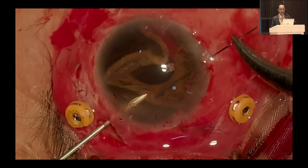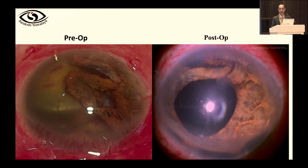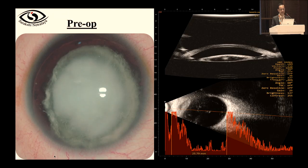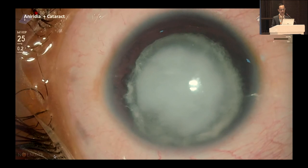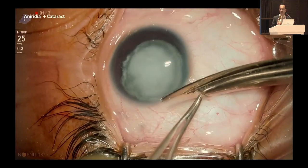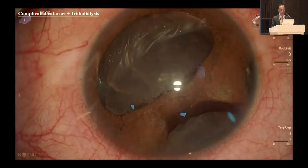Anchoring was done at two-thirty, one-thirty, and five-thirty o'clock meridians with 10-0 prolene. For this patient we performed lensectomy, vitrectomy, endolaser, scleral fixation of IOL, and constructed a pupillary diaphragm even in this severe case. In congenital aniridia, the commonest reasons for poor vision are foveal hypoplasia and photophobia; these patients need an aniridia IOL anchored like a scleral fixation.